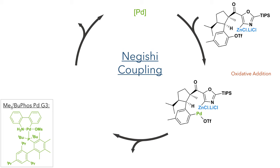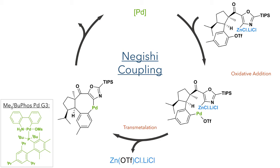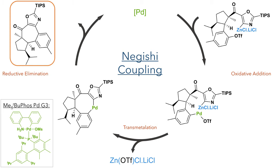To carry out this Negishi coupling, the researchers used a third-generation Buchwald catalyst. Similar to the Suzuki coupling, this starts off with an oxidative addition into the carbon-triflate bond, and then undergoes a transmetallation — in this case with the zinc species of the oxazole ring, eliminating zinc triflate in the process. This undergoes a reductive elimination to form the new carbon-carbon bond and complete the construction of the central seven-membered ring.